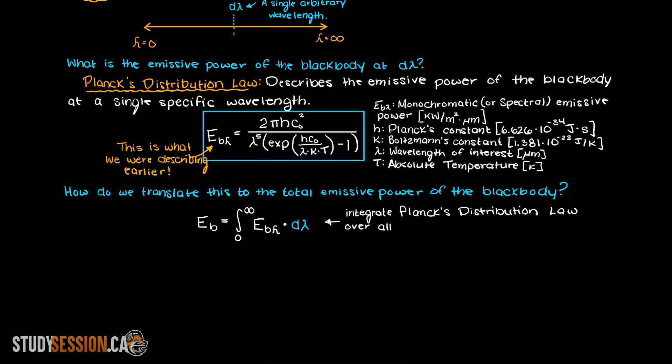If you were to carry out the integration of this integral here, you would indeed see that this statement here is true. So that is how the formula for the total emissive power of a blackbody can be found.